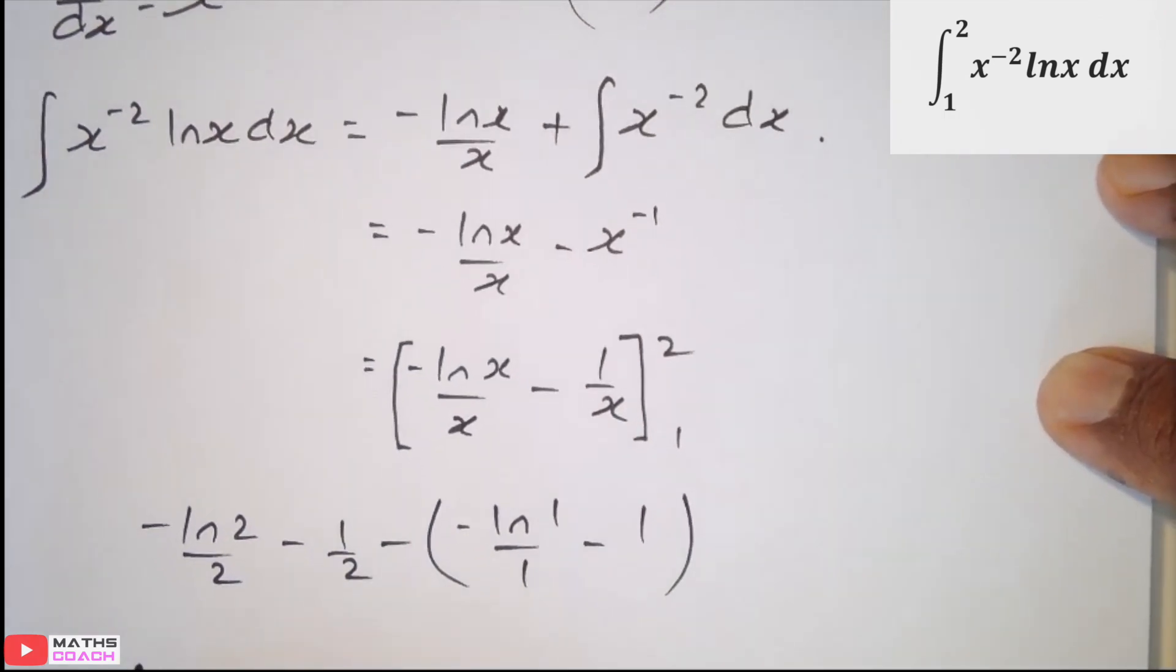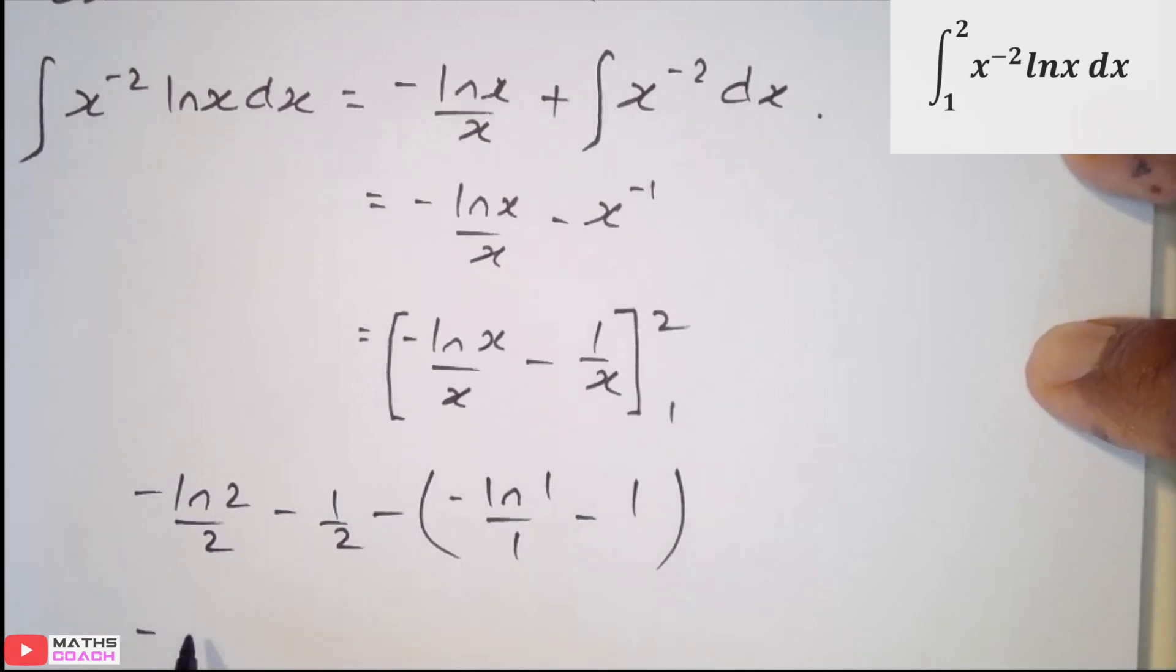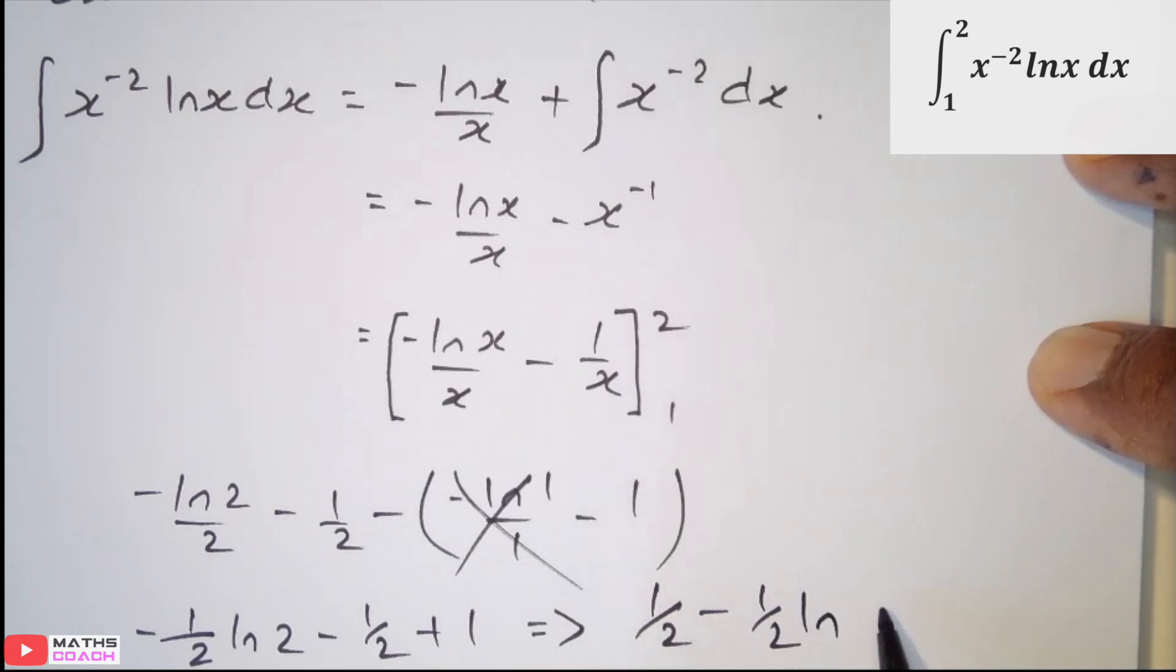We can write negative half ln 2, which is this one. Negative half. We know that ln 1 can go. Negative and negative is add 1. And just to finish this off, we can now write minus half add 1 is the same as half. We get half minus half ln 2.